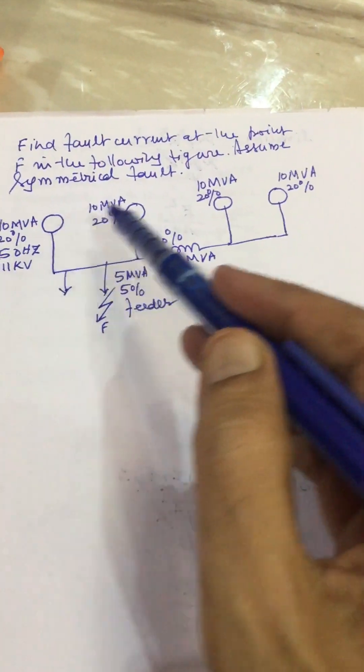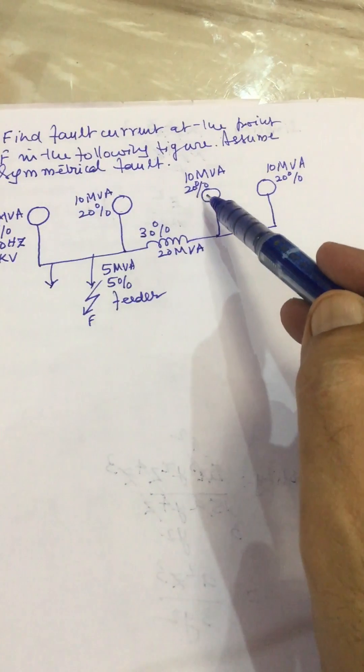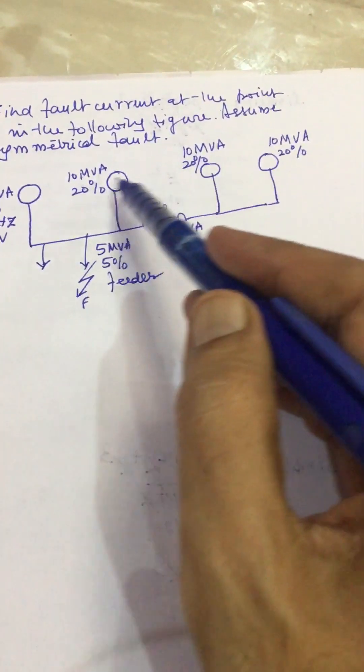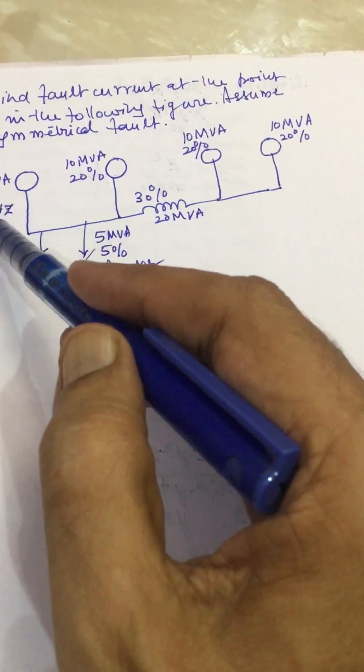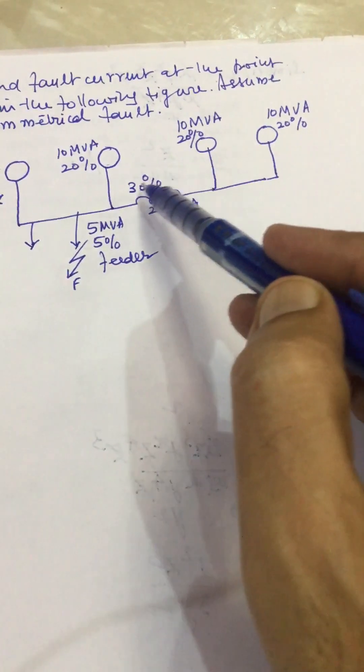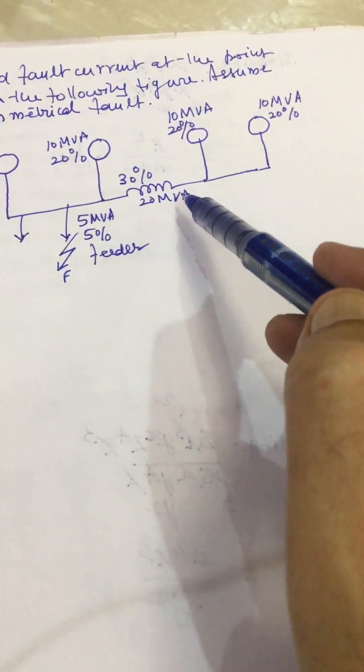This is one generator, this is one generator, these are connected to this bus and this is another generator, another generator. All are similar generators, each is having 10 MVA rating, 20 percent reactance, 50 hertz and 11 KV.